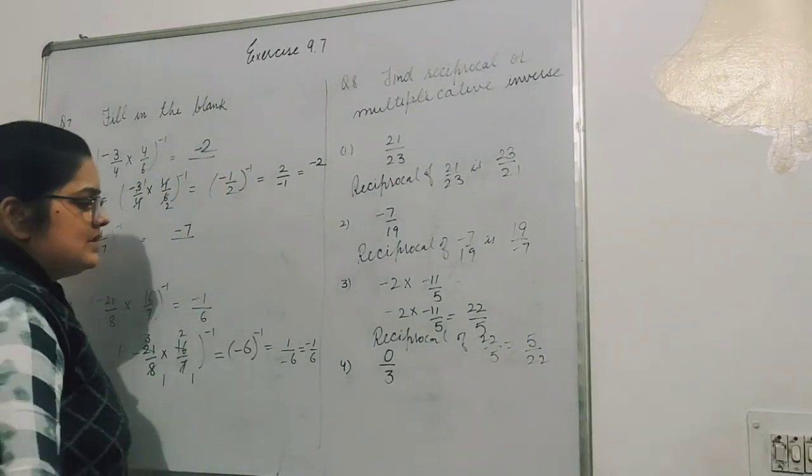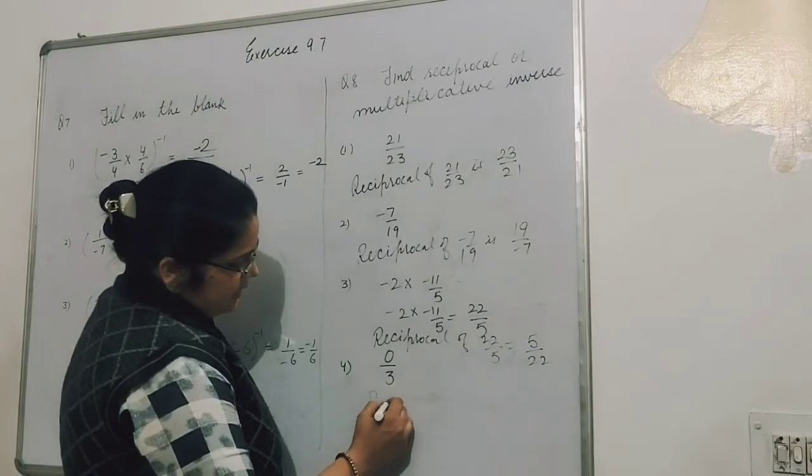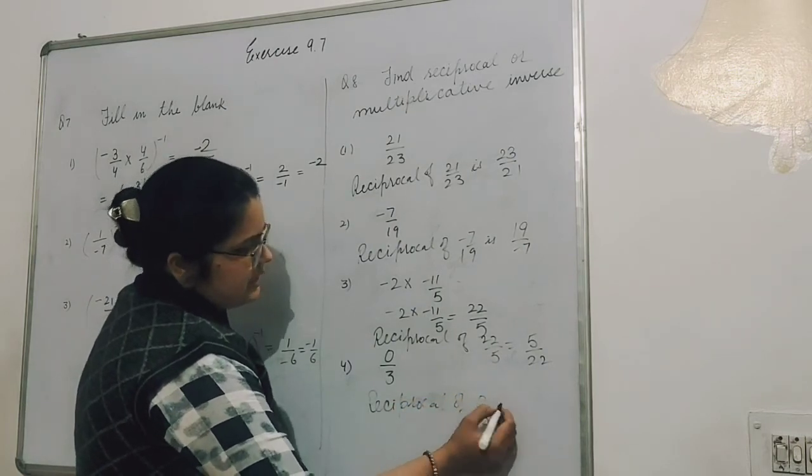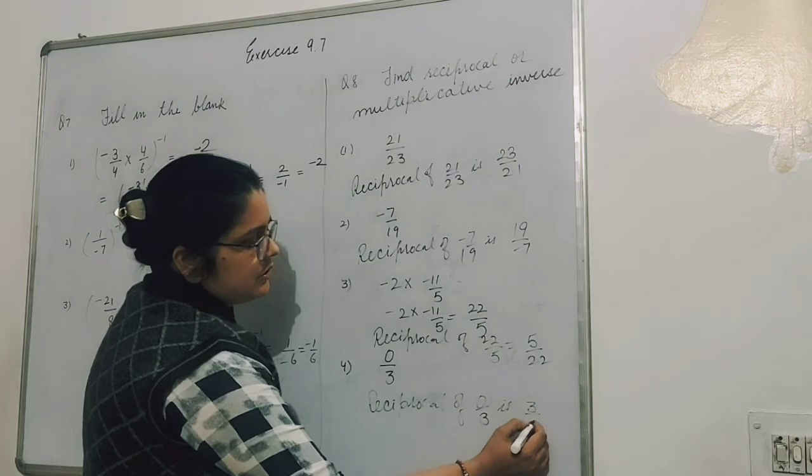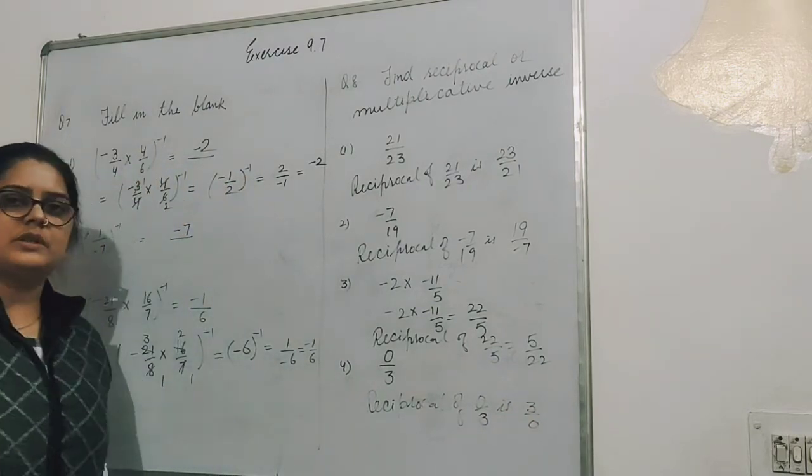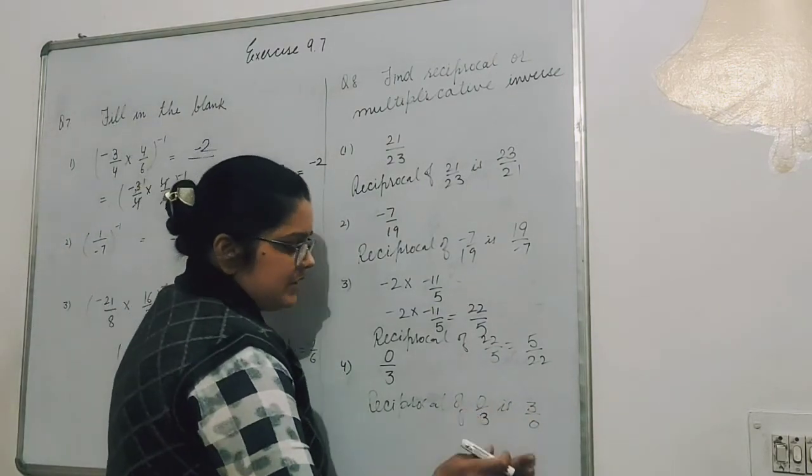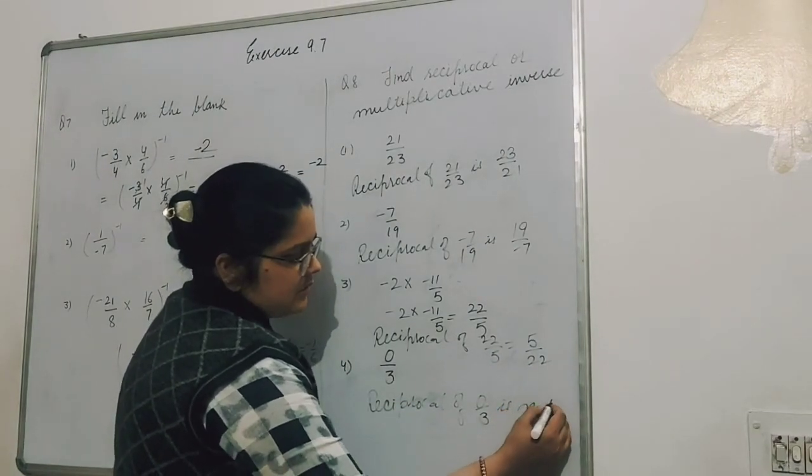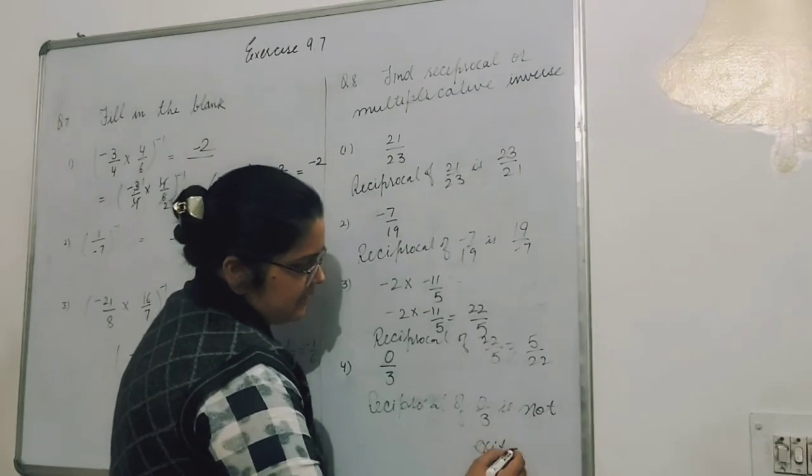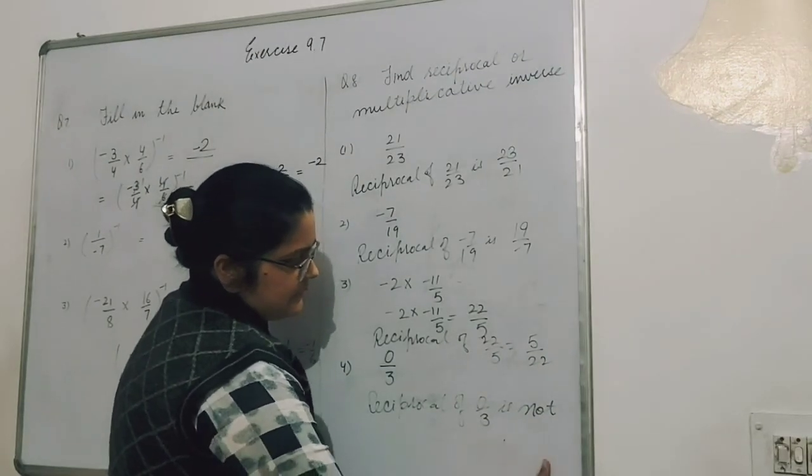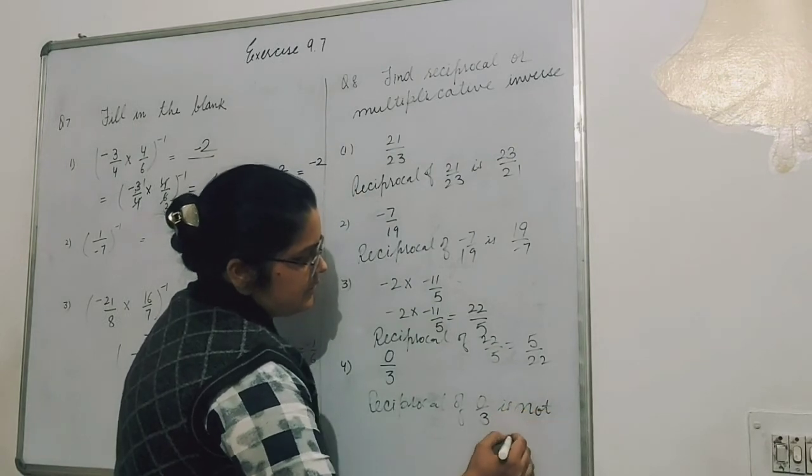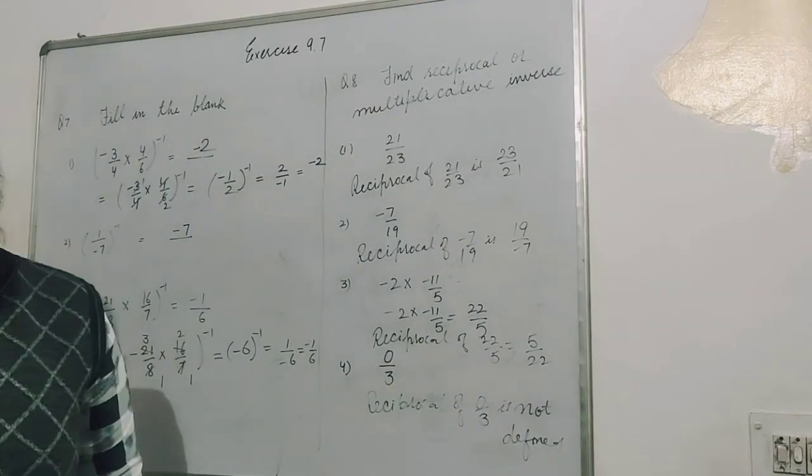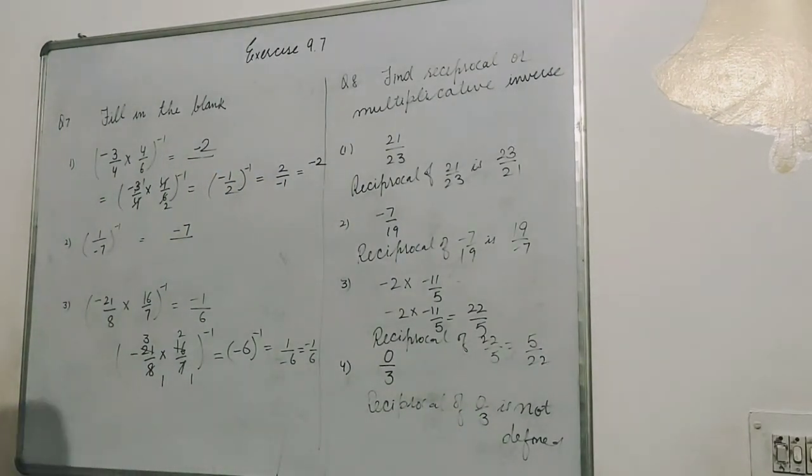The last one: 0 upon 3. If you take its reciprocal, what comes? 0 upon 3's reciprocal will be 3 upon 0. Denominator with 0 does not exist, so we write this is not defined. Denominator becomes 0, that means number is not defined.